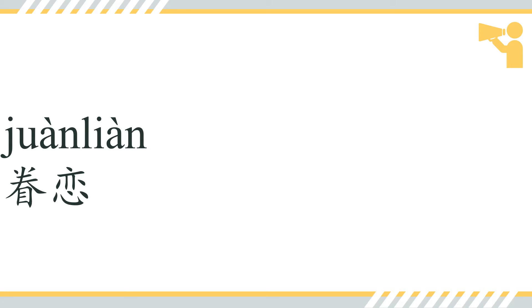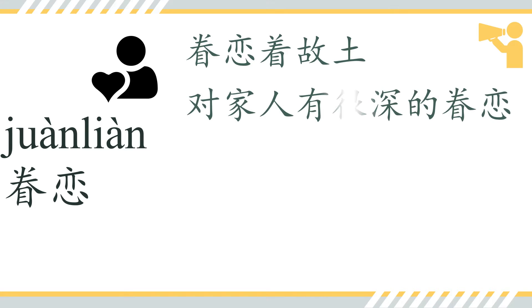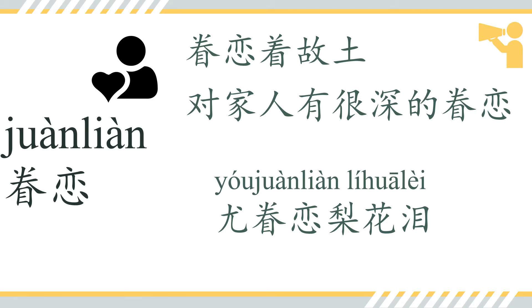眷恋 — deeply, sentimentally attached to a place or a person. We can say 眷恋者故土 — 故土 means 'the hometown.' 眷恋者故土. Or 对家人有很深的眷恋. And here we have: 尤眷恋离花泪.